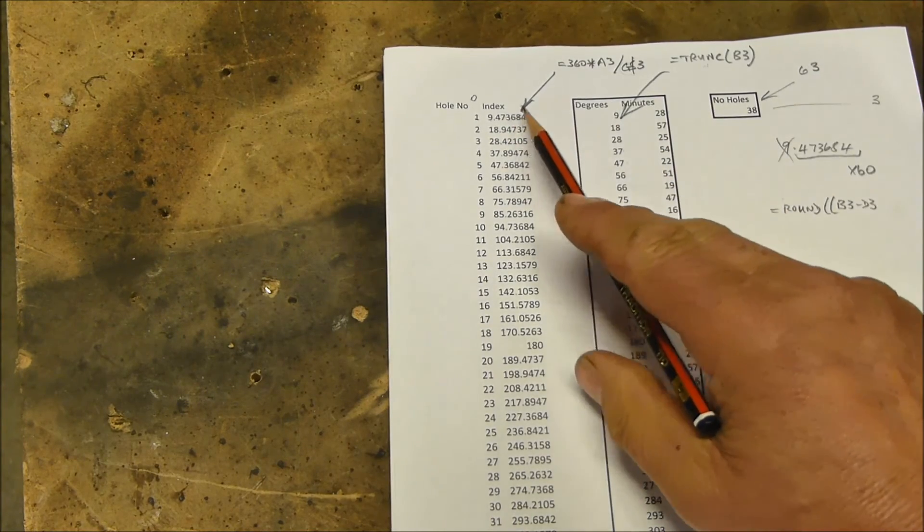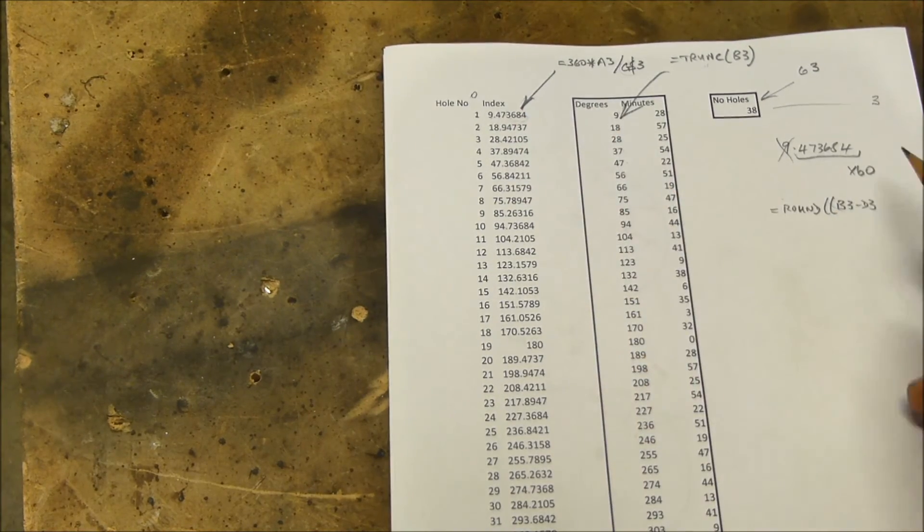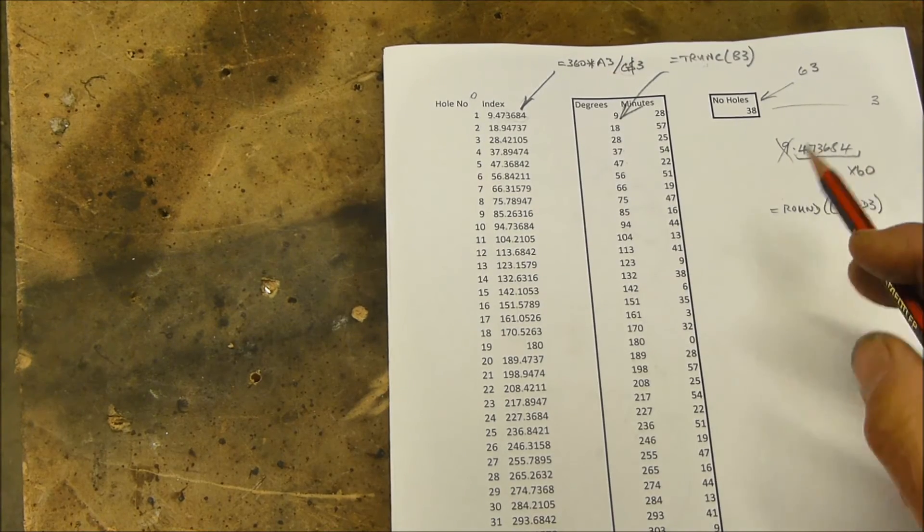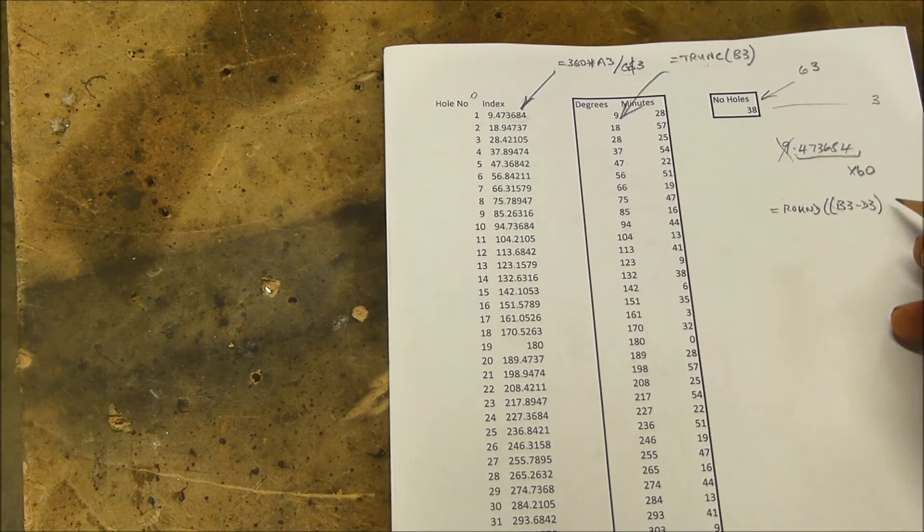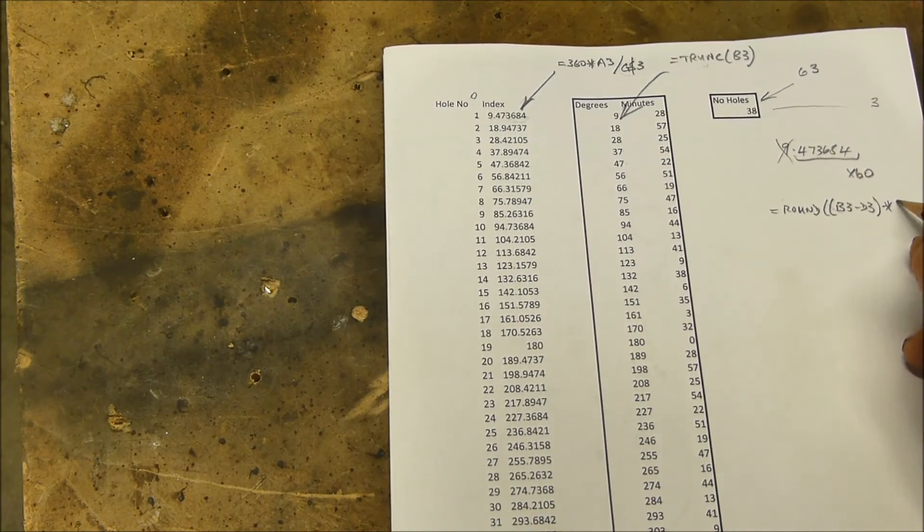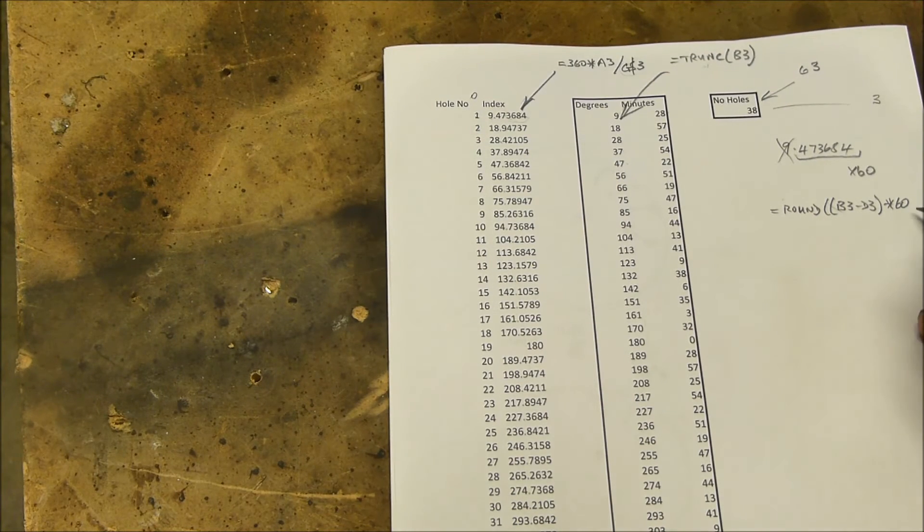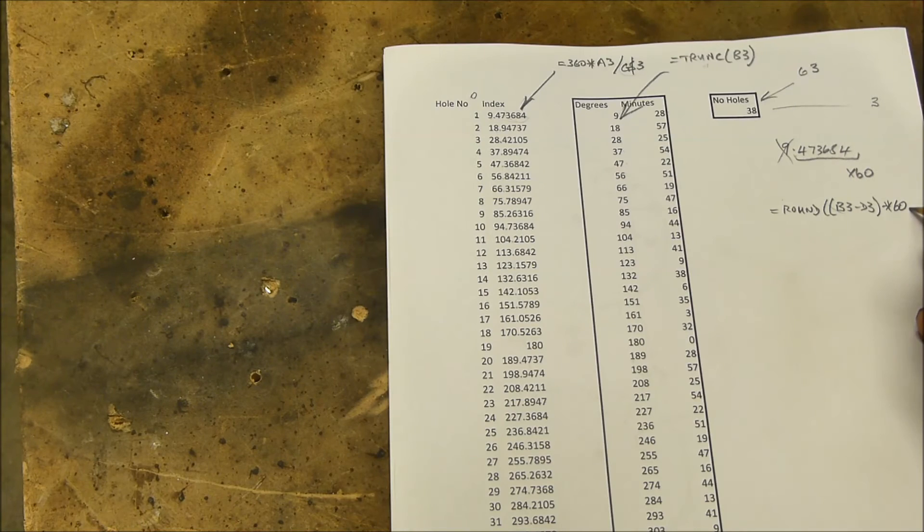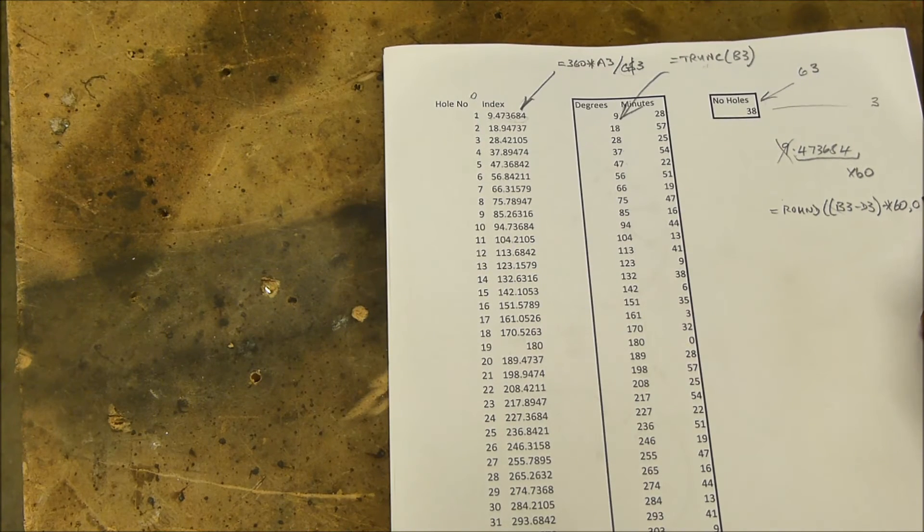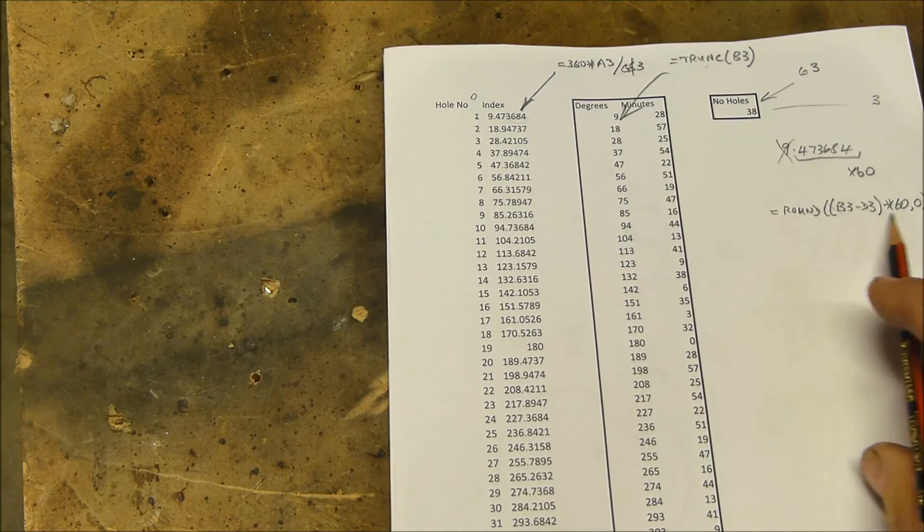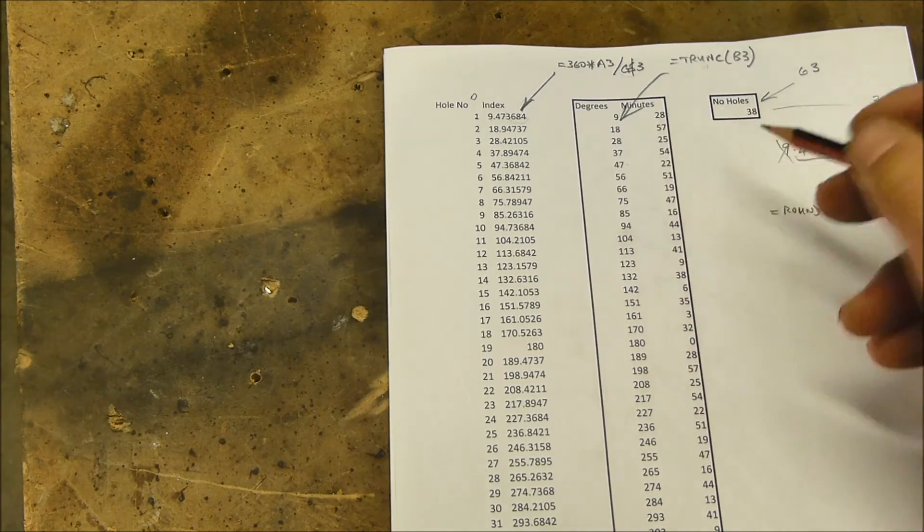And we want to round this number, but we want to get rid of the 9. So if we round B3 minus D3, that's B3, that's D3, so this bit in here is the decimal bit that we want. We multiply it by 60 to turn it into minutes of angle, and then we need to tell Excel that we don't want any decimal points, so we put a zero there.